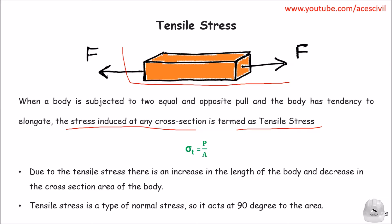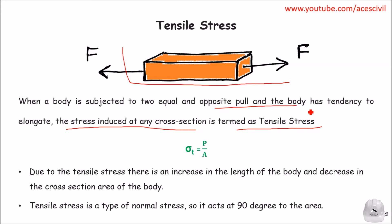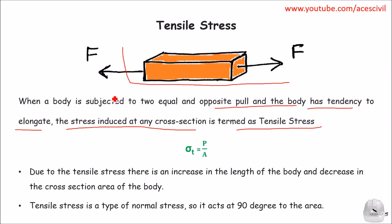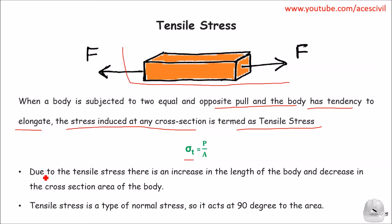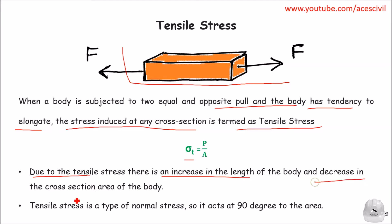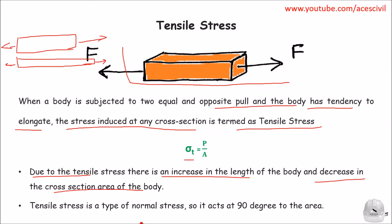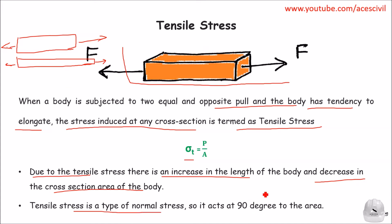First we will discuss about tensile stress. When a body is subjected to equal and opposite pulls, the body has a tendency to elongate, as you can see in the diagram. The stress induced at any cross section is termed as tensile stress. Tensile stress is denoted by sigma T and is equal to P upon A, where P is the applied load. Due to tensile stress, there is an increase in length of the body and a decrease in the area of cross section. Tensile stress is a type of normal stress and it always acts at 90 degrees.